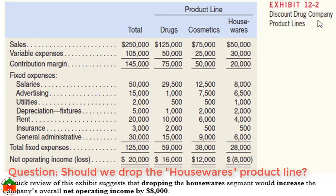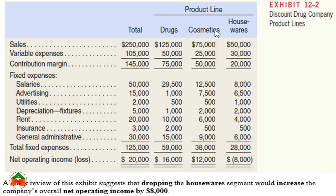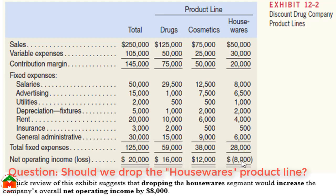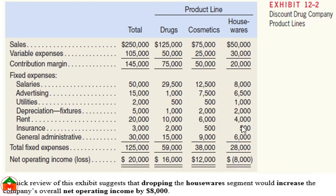Here we can see a problem. Suppose a company named Discount Drug Company has three product lines: Drugs, Cosmetics, and Housewares. The Drugs product has a net operating income of $16,000, Cosmetics has a net operating income of $12,000, but the Housewares product is generating a loss of $8,000. So we need to take a decision about whether to drop the Housewares product line.